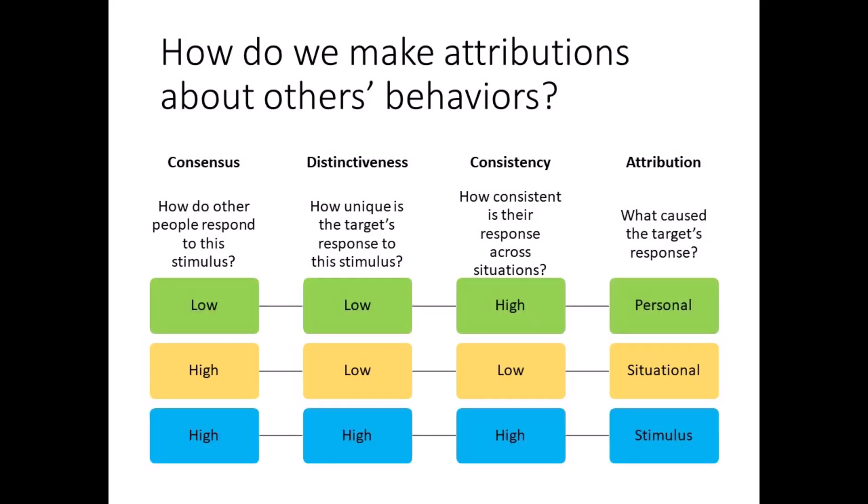Kelley's covariation model is one of many attribution theories. One theme of these theories is that we are not perfect social perceivers. In the next section, you will learn about some of the attributional biases that impact our judgments.